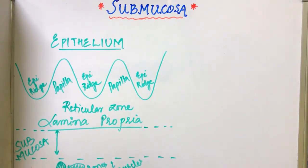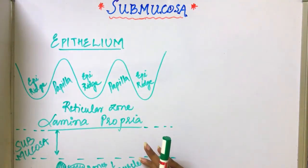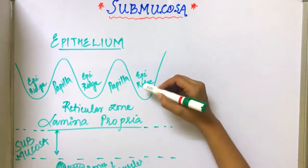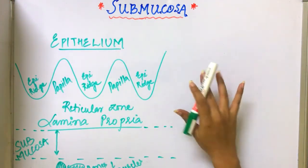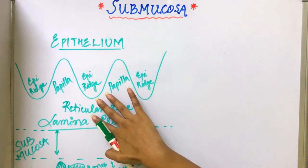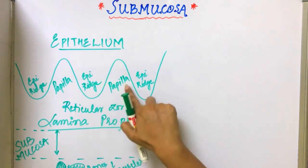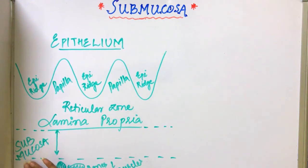Submucosa consists of connective tissue of varying thickness and density. It attaches the oral mucous membrane to the underlying structures. This is the epithelium, this is the basement membrane, and these are the epithelial ridges — we have discussed all this in the previous videos. Below the epithelium is the lamina propria, or the connective tissue. This is the reticular zone of the lamina propria, and the one anastomosing with the epithelial ridge is the papillary zone.